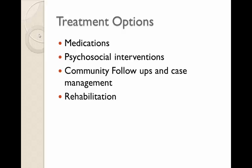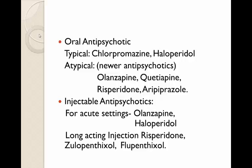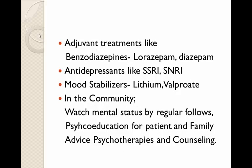The treatment options in psychosis are medications, psychosocial intervention, community follow-up and case management, and rehabilitation. Medications used are mostly an oral antipsychotic, which may be a typical antipsychotic such as chlorpromazine or haloperidol, or more often these days an atypical antipsychotic such as olanzapine, quetiapine, risperidone, or aripiprazole. Injectable antipsychotics are also used in acute settings — olanzapine and haloperidol — and in long-term settings, injections of risperidone, zuclopenthixol, flupenthixol. Adjuvant treatments like benzodiazepines such as lorazepam and diazepam are often needed in the acute phase to help reduce agitation and sleep disturbance.